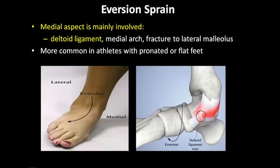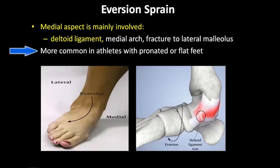The less common eversion ankle sprain involves the deltoid ligament on the medial aspect of the joint. It is more common in athletes with pronated or flat feet.